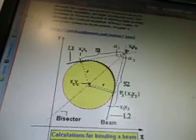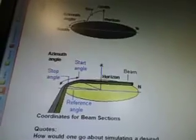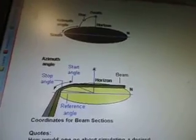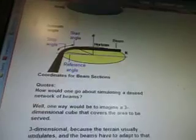Calculations for bending a beam. These are all his little diagrams that he created, just showing the different angles and stuff where you want to do. Coordinations for beam sections. How would one go about simulating a desired network of beams? Well one way would be to imagine a three-dimensional cube that covers the area to be served.